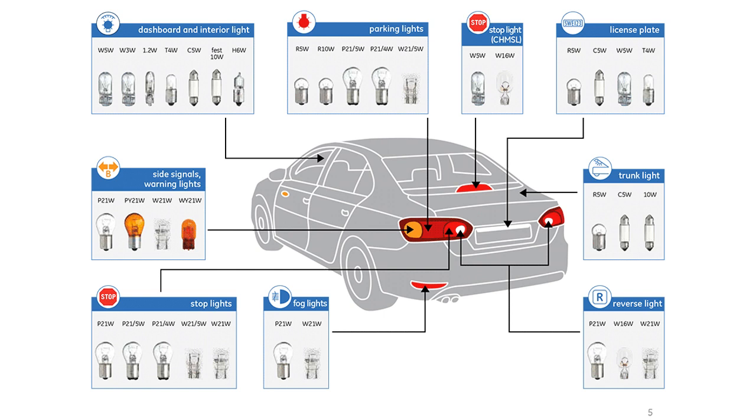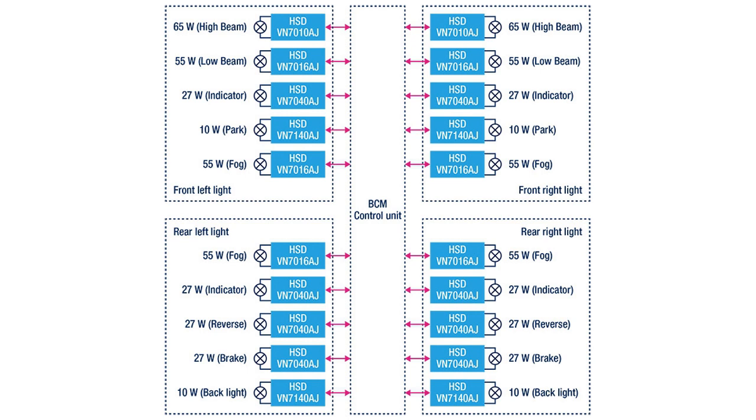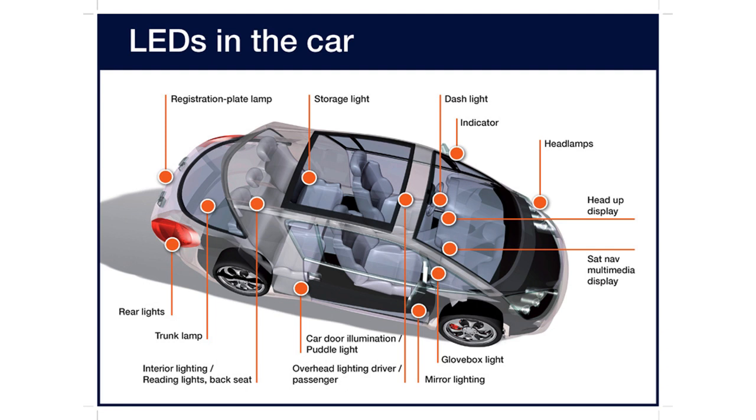More and more automotive manufacturers are moving away from halogen light bulbs and adopting LED technology. But LED lighting systems have diverse power supply requirements, depending on the number of devices present on a string, the current needed, dimming, and other factors.